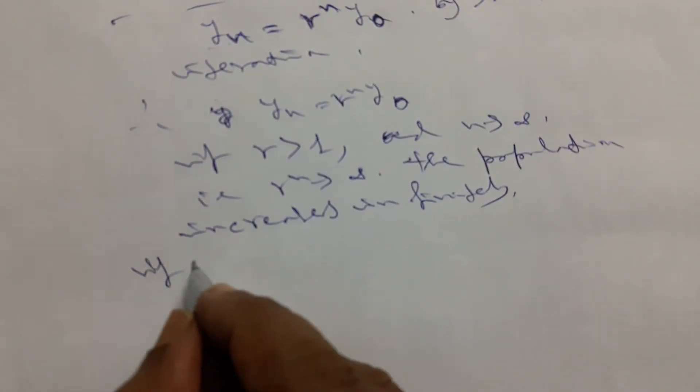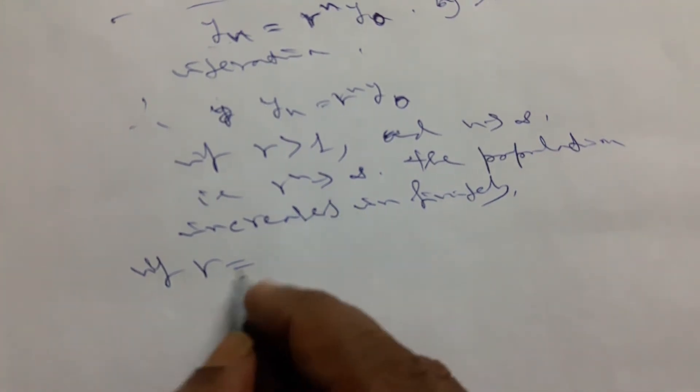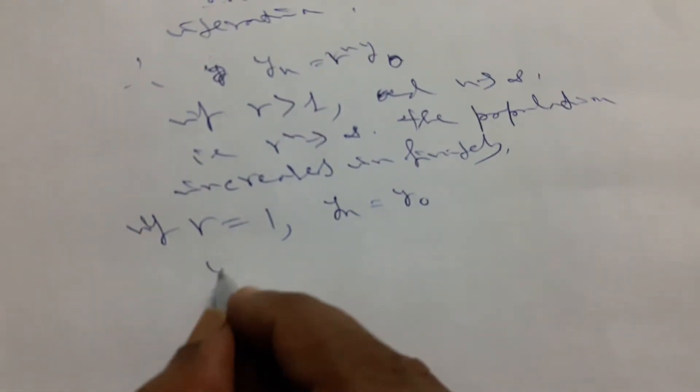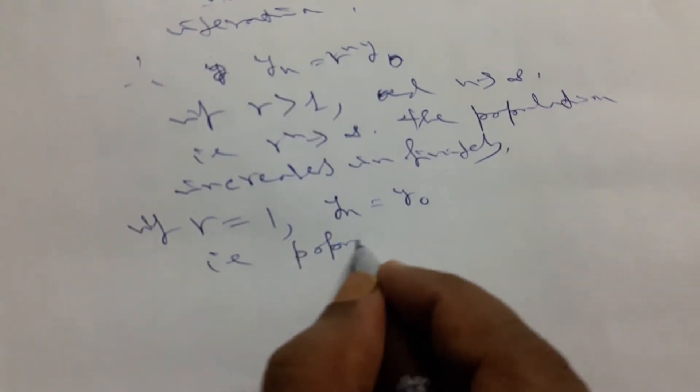If r equals 1, then y_n equals y_0, that is population remains constant.